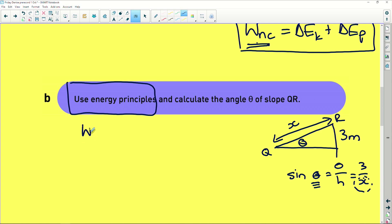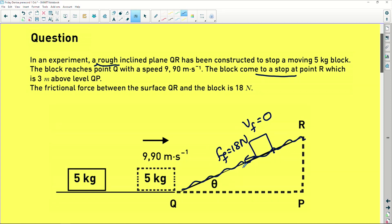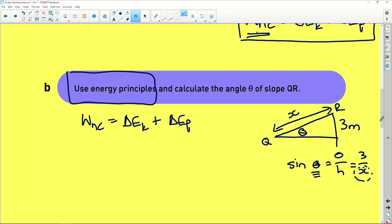We're going to start off by W_NC equals delta E_K plus delta E_P. Now this is given to you on the information sheet. Now what non-conserved forces were there? If we have a look at the stem of the question, it says we've got friction. A rough inclined plane has been constructed to stop a moving block, and that is the only non-conserved force that we have. There's no other non-conserved force. So we're going to have W_NC, which is nothing more than the work done by friction, is equal to the change in the kinetic energy. So that is going to be a half m v final squared minus a half m v initial squared. Remember, change means the difference. Plus.